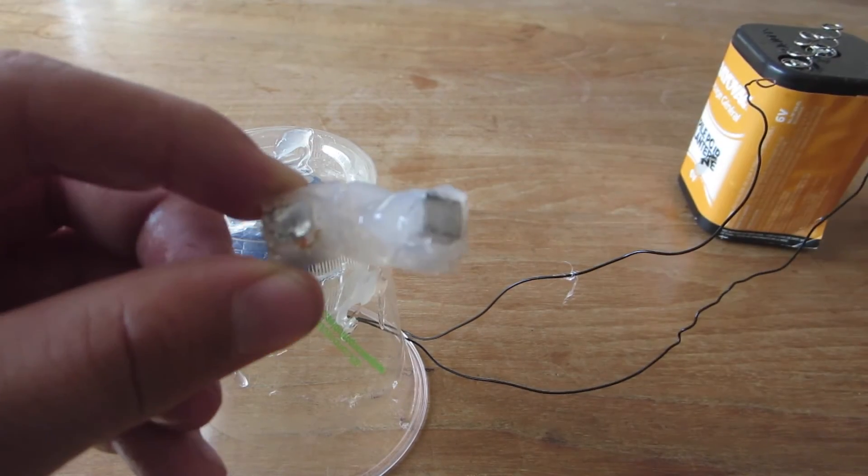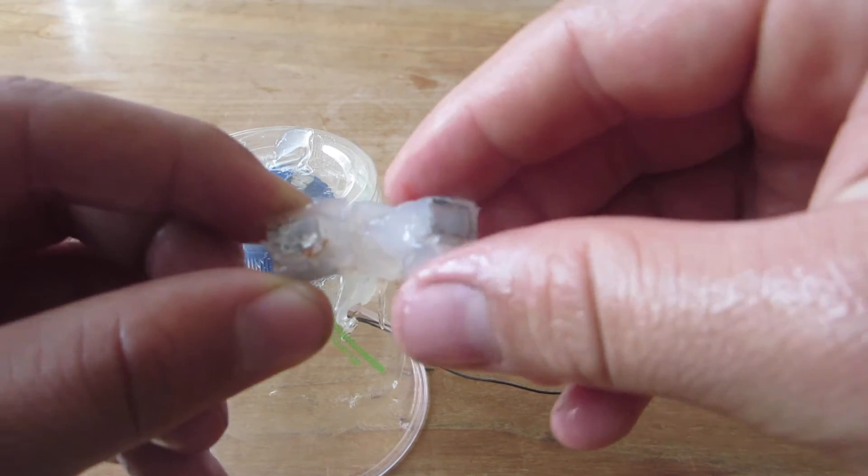The stir bar has simply two neodymium magnets hot glued together, one with the south pole facing up and the other one with the north.